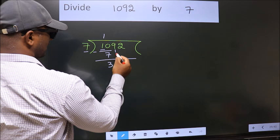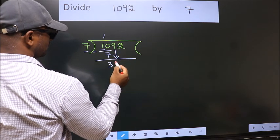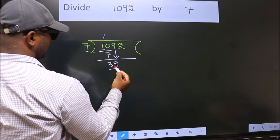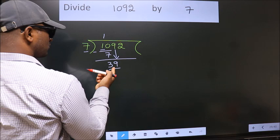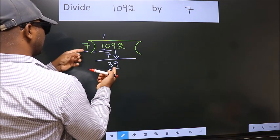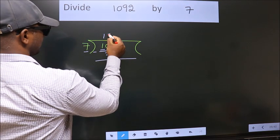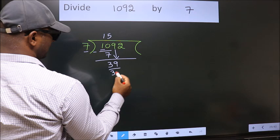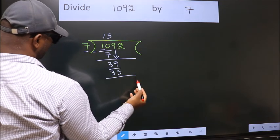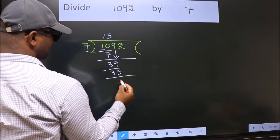After this, bring down the beside number. So, 9 down. 39. A number close to 39 in the 7 table is 7 fives, 35. Now we subtract. We get 4.